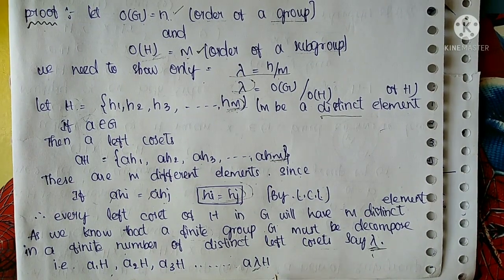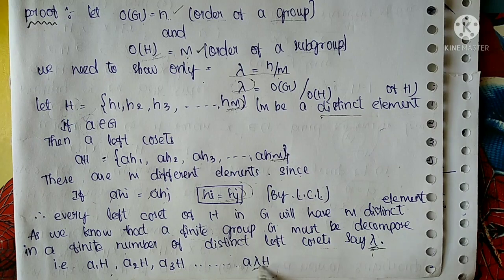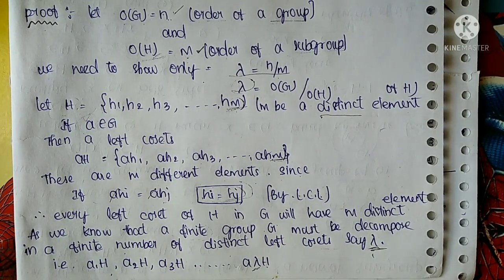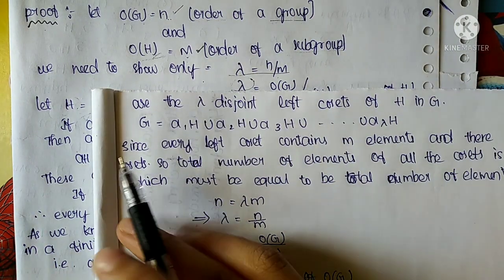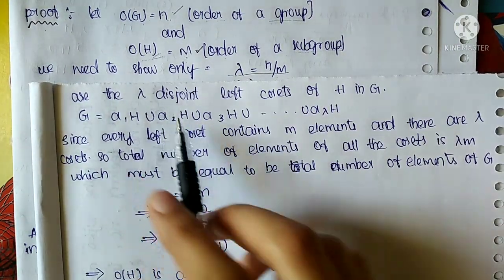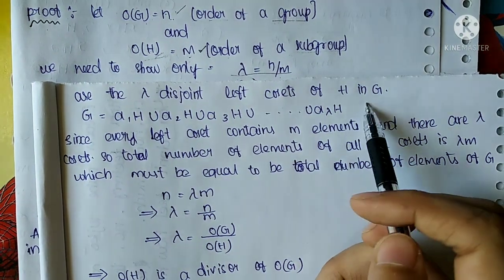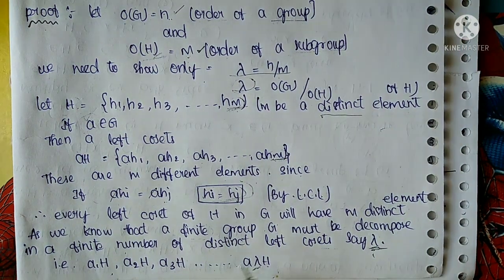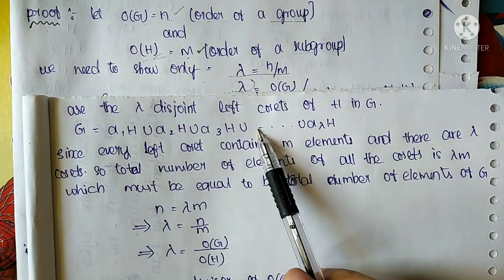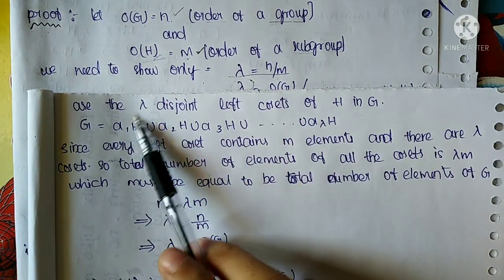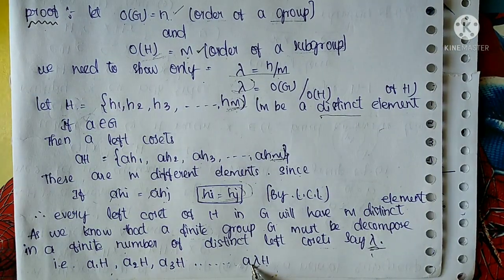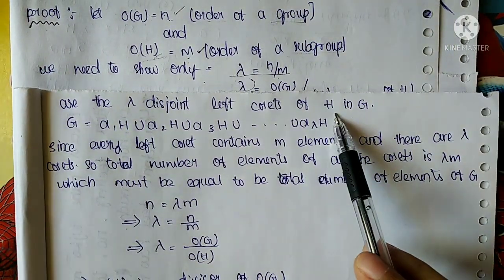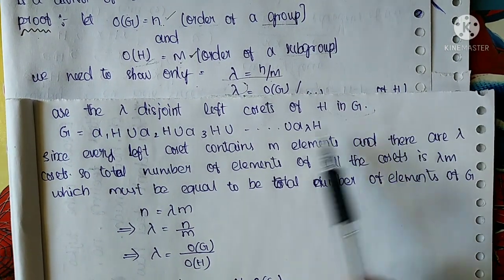These A1H, A2H, A3H, ... , A-lambda-H are the lambda disjoint left cosets of H in G. Since H is a subgroup of G, G equals A1H union A2H union A3H union ... union A-lambda-H.